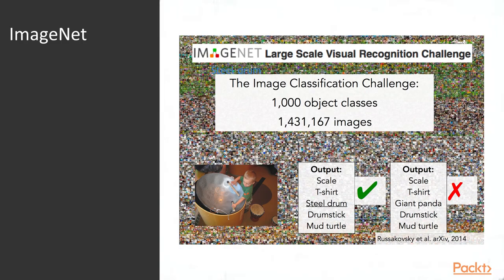ImageNet is a very large-scale visual recognition challenge dataset with more than 1 million images across 1,000 classes. It helped deep learning make big breakthroughs. The algorithm reads images and outputs the correct class — for example, steel drum, drumstick, or mud turtle.